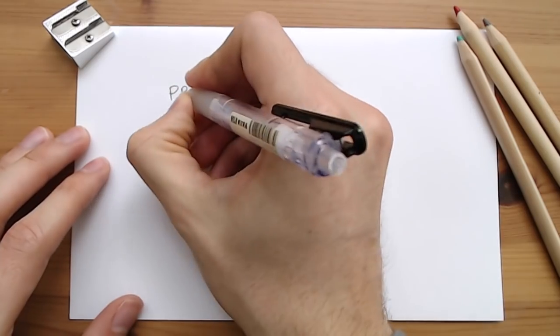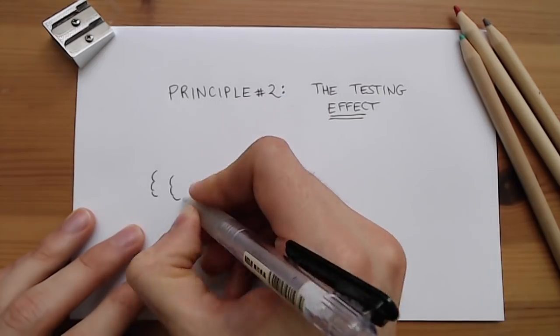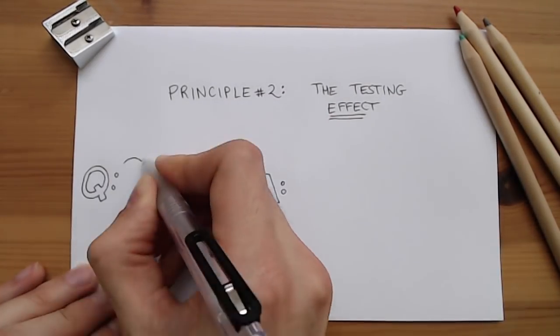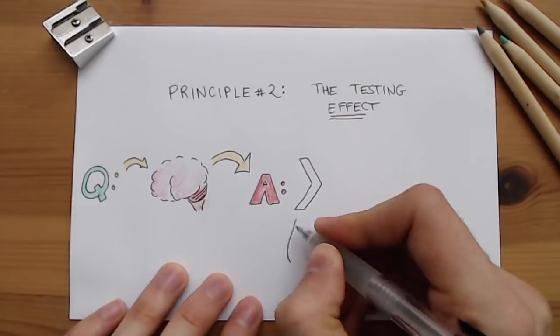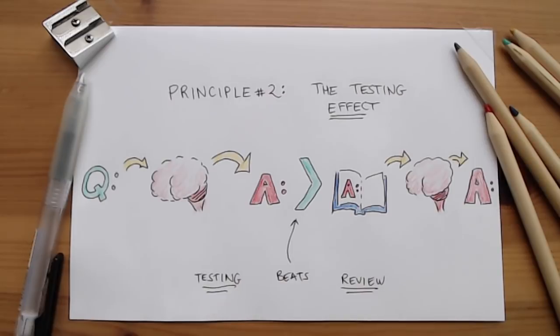This result is just one of many from a broad literature concerning the testing effect. This effect says that testing yourself, so that you have to retrieve the important information from memory, works much better than rereading notes or creating diagrams while referencing your textbook, in terms of how you'll perform on the eventual exam.